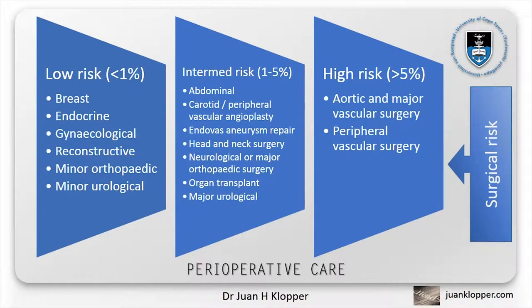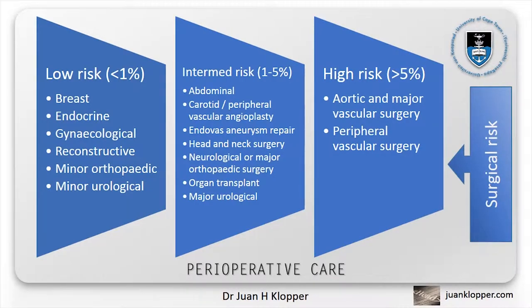Low risk surgeries have an incidence of less than 1% cardiac complications, and typically include breast, dental, endocrine, eye, simple gynecological, reconstructive, minor orthopedic, and minor urological procedures. The intermediate risk group carries a 1–5% risk of cardiac complication and includes abdominal and carotid procedures, peripheral arterial angioplasty, endovascular aneurysm repair, head and neck surgery, major neurological and orthopedic surgery, pulmonary, renal, and liver transplants, and major urological procedures. The high risk group carries an excess of 5% risk and includes all aortic and major vascular surgeries, as well as peripheral vascular surgery. Not only are massive demands placed on the heart during these procedures, but patients requiring these usually have concomitant cardiac disease.